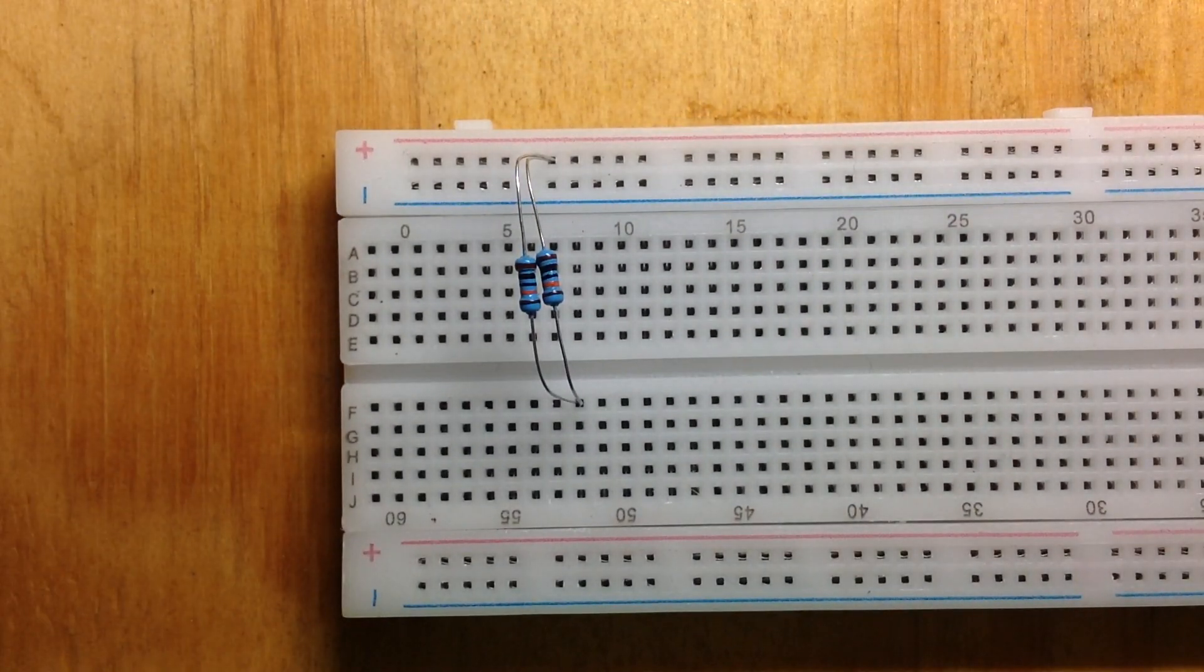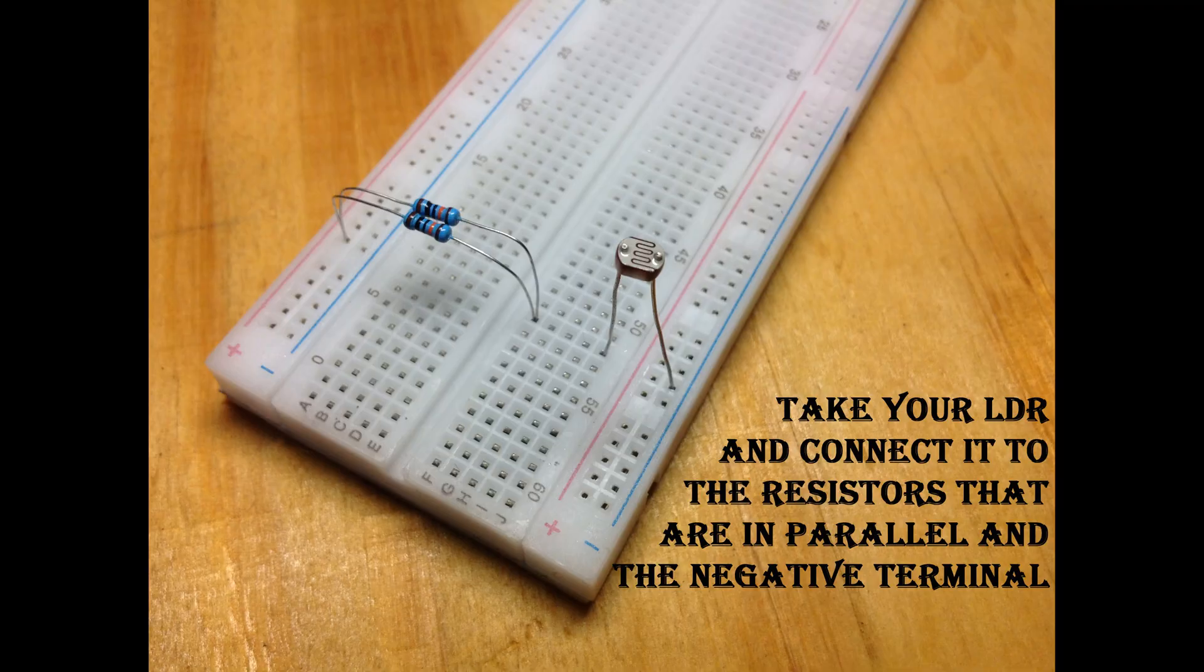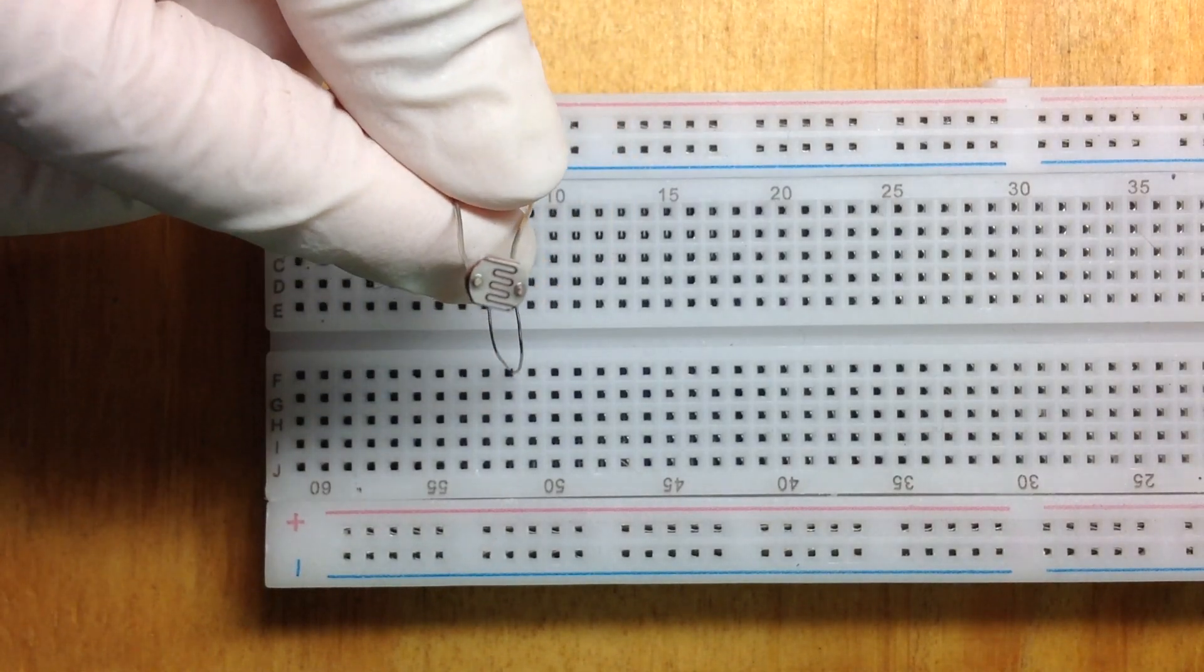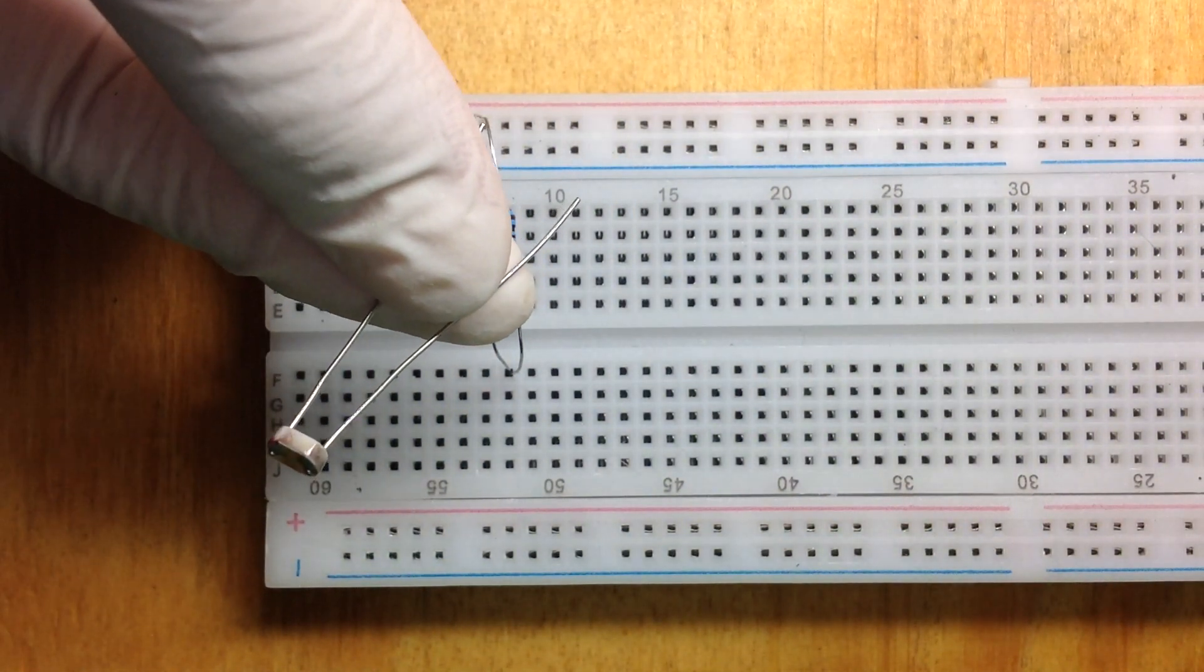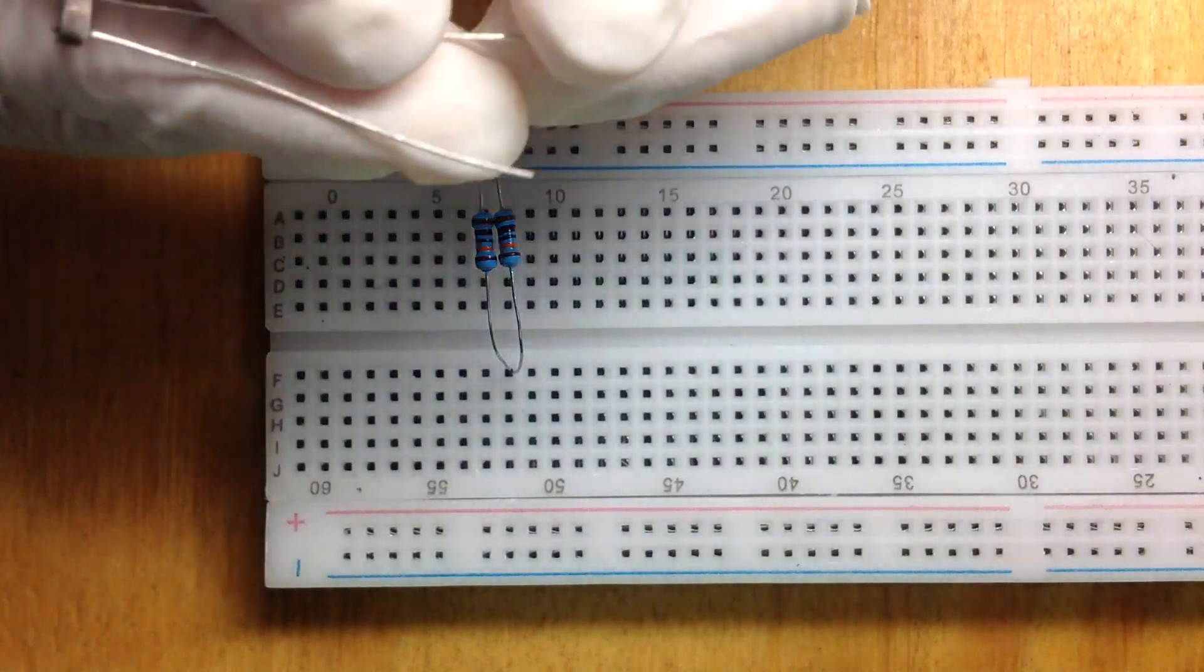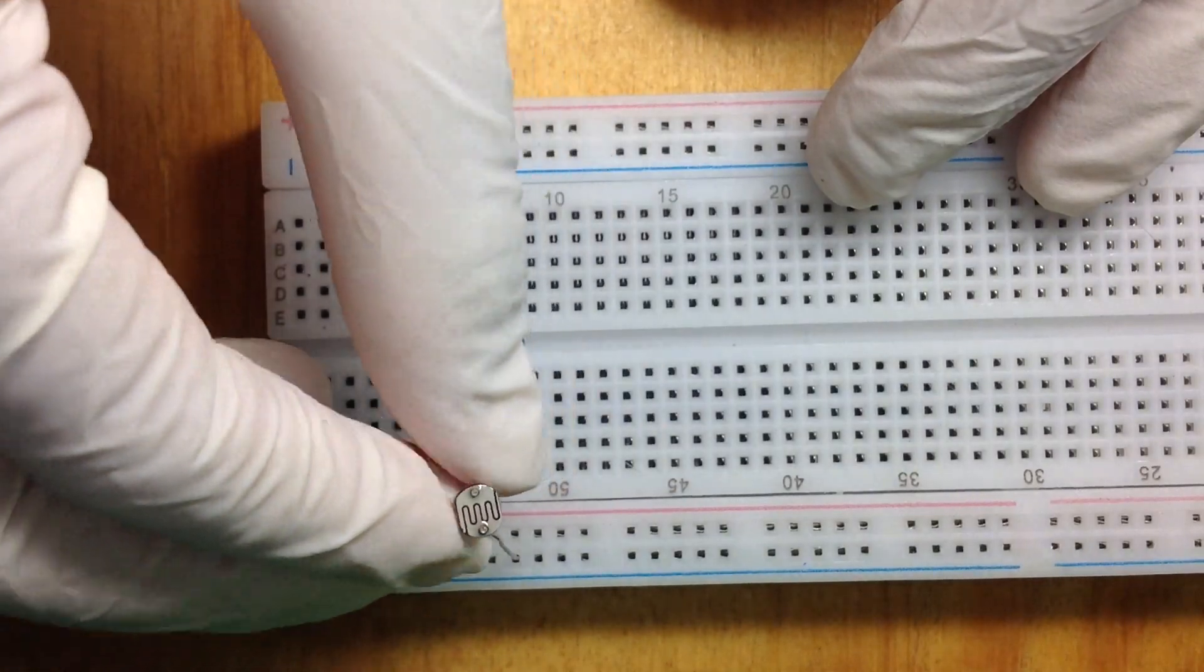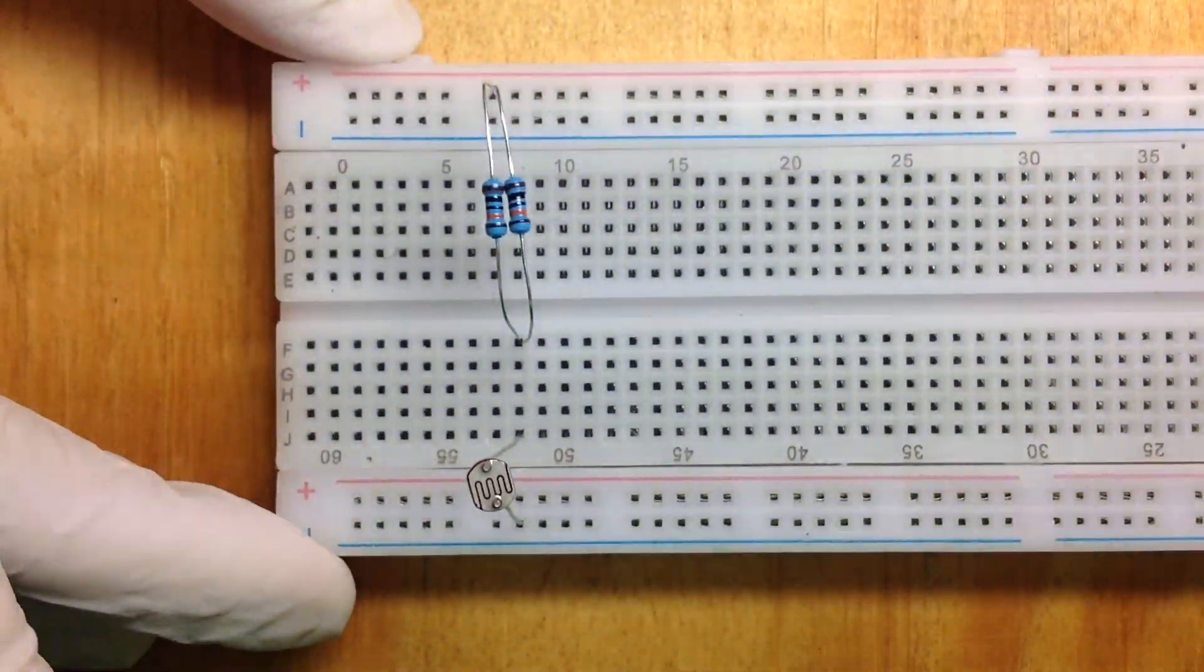Take your LDR, which is your light dependent resistor, and connect it to the resistors which are in parallel and the negative terminal of the breadboard. The LDR has no polarity, so it does not have a positive or negative lead, just like a normal resistor.